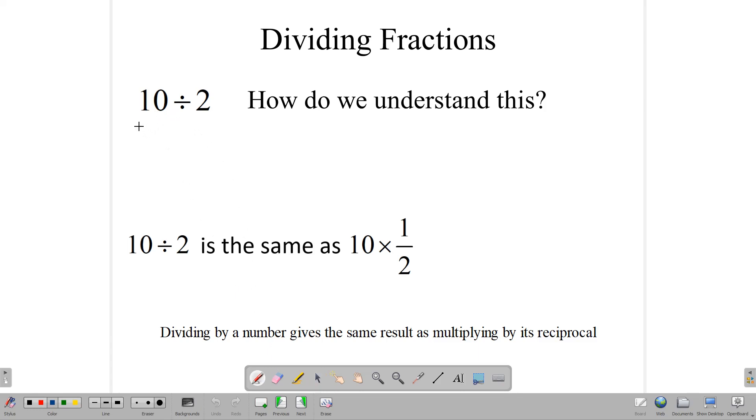But let's write it out a little bit. 1, 2, 3, 4, 5, 6, 7, 8, 9, 10. So here we have 10 round things. So how many times can we take out 2? 1 time, 2 times, 3 times, 4 times, 5 times.